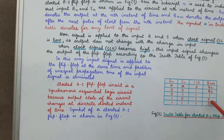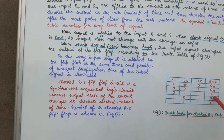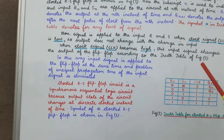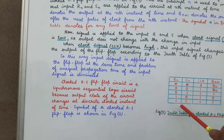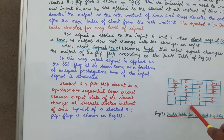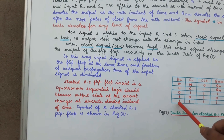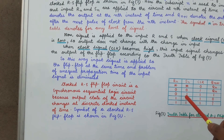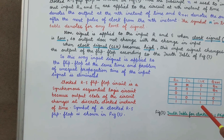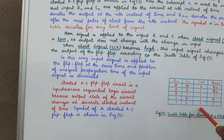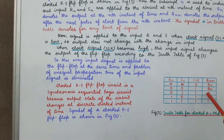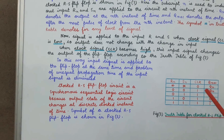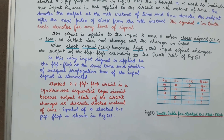When R is given a value, the output is 0 after application of the clock. When R and S are both 1 and the clock is 1, we cannot predict the output — this is the indeterminate case.